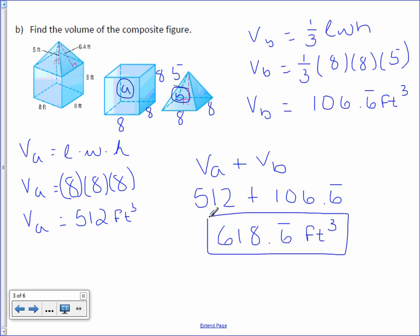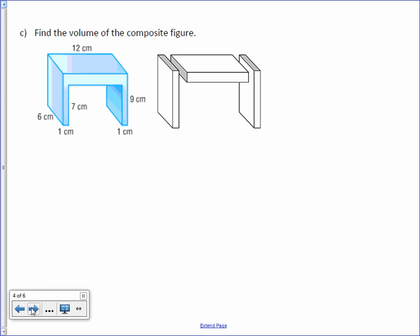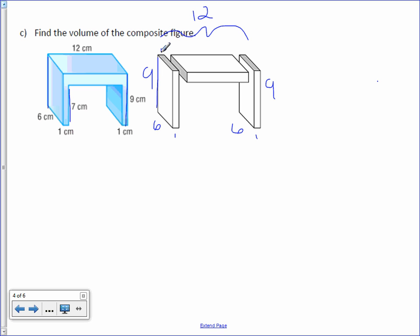Let's try one more volume. Find the volume of the composite figure. This figure is made up of three rectangular prisms. The first one on the left has dimensions of 6 and 1. The small inner dimension is 7, and the larger dimension is 9 — the same as the opposite side. So those two pieces are the same: 9, 1, and 6. The top one is a bit tricky — the whole thing is 12, the little pieces are 1 each, so the remaining piece is 12 minus 1 minus 1, or 10.